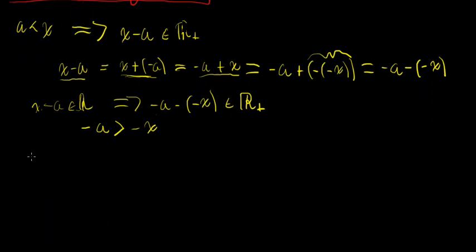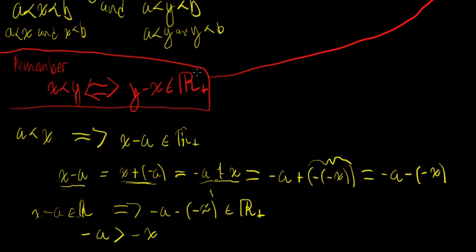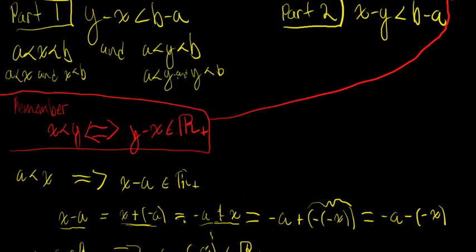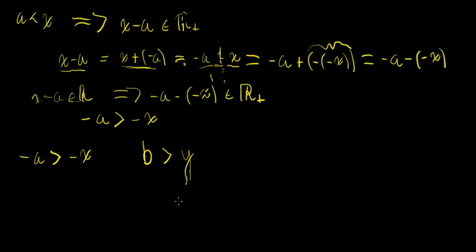So what we have so far is: negative A is strictly greater than negative X. We also have that Y is strictly less than B — or another way of saying that, B is strictly greater than Y.